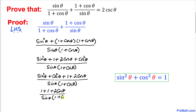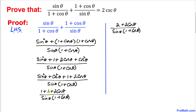Combining 1 plus 1 gives us 2, so we now have 2 plus 2 cosine of theta in the numerator, divided by sine of theta times 1 plus cosine of theta. We can see that 2 is a common factor, so we can factor it out.